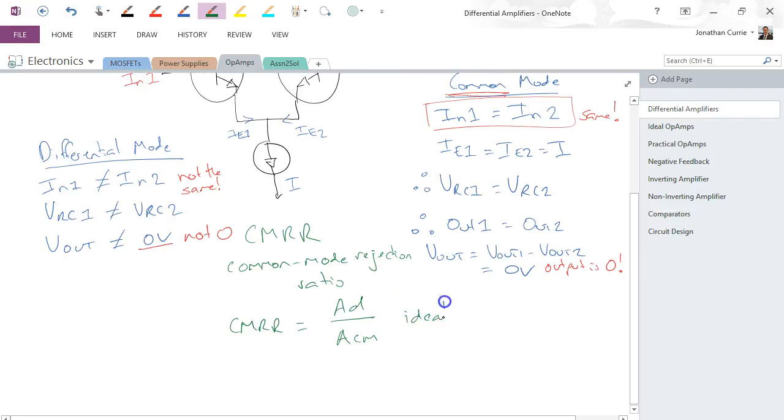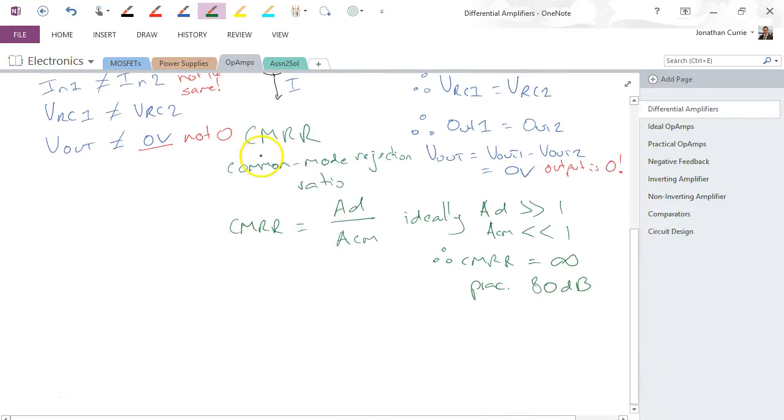Ideally, AD is very big, ACM is very very small, and therefore CMRR should be equal to infinity. Practically, if we look at it in decibels, somewhere around 80 decibels is very big.